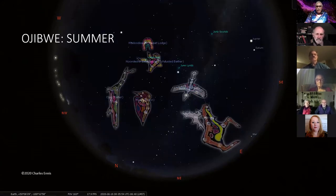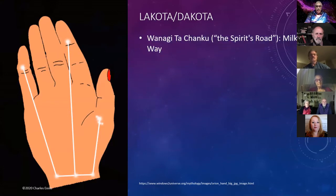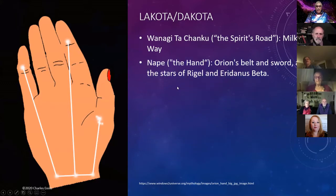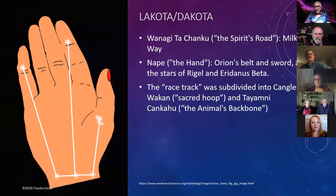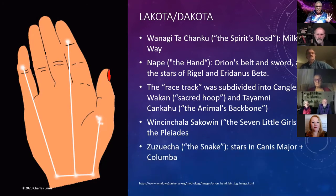In the Ojibwe summer sky, there are all kinds of interesting constellations. For Lakota and Dakota, part of Orion turns into a hand. You've got the spirit's road — the Milky Way — and Nape, the hand, which is Orion's belt, sword, and the stars of Rigel and Eridanus Beta. You've got the racetrack, subdivided into the sacred hoop and the animal's backbone, the seven little girls which is the Pleiades, and the snake.